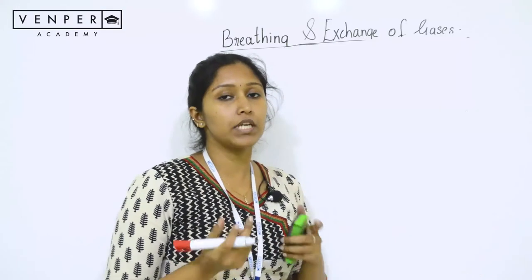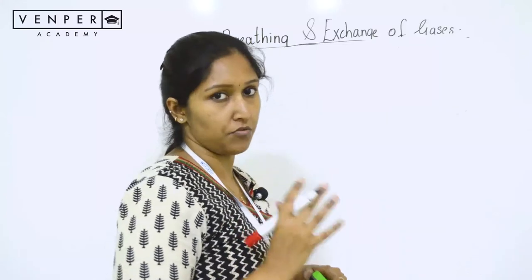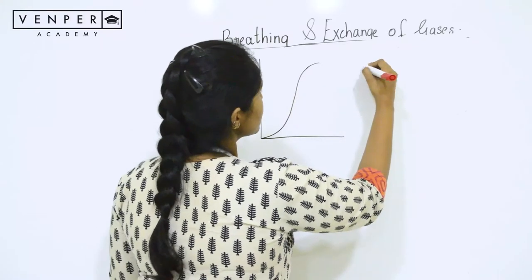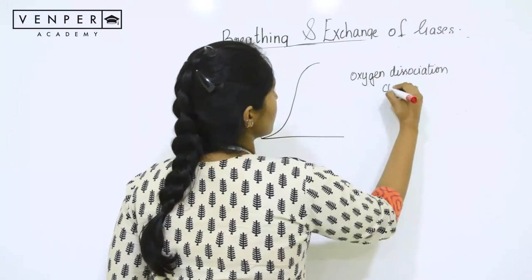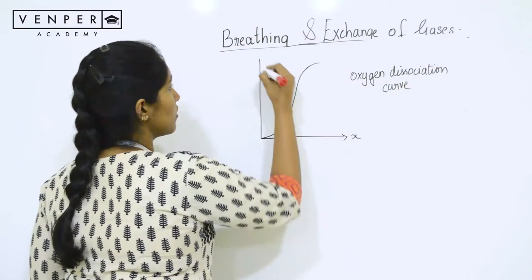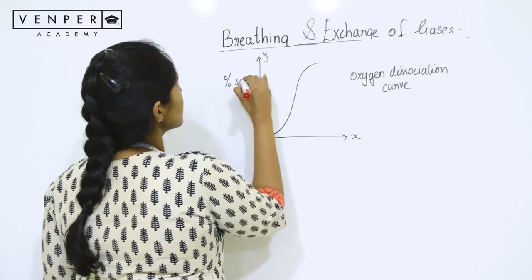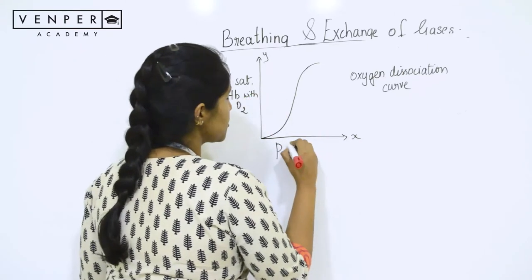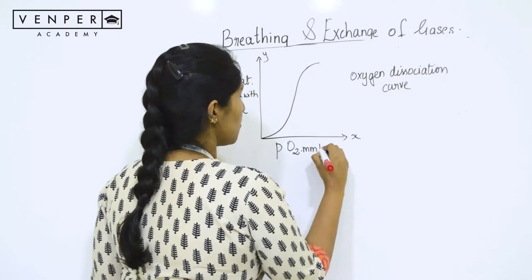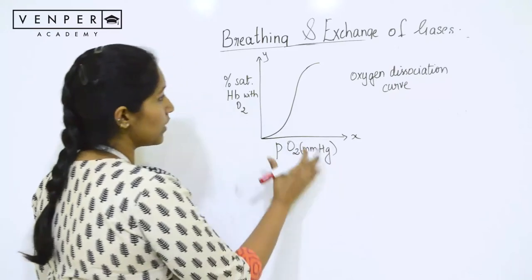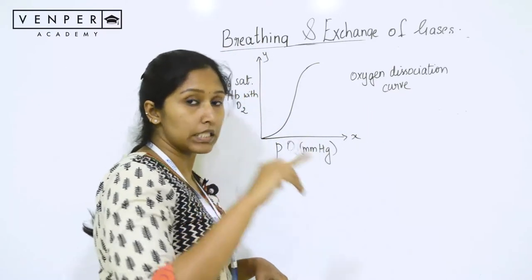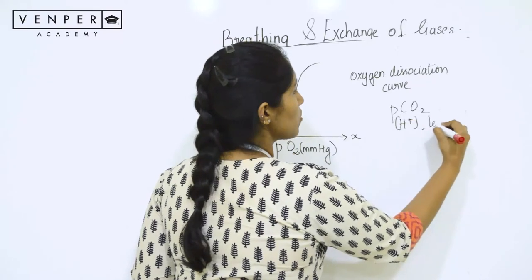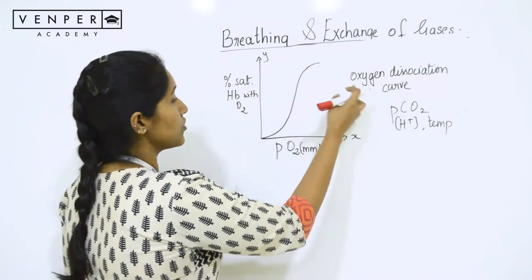To study the association and dissociation of oxygen with hemoglobin, we draw a specific curve called the oxygen dissociation curve. It is drawn between the percentage saturation of hemoglobin with oxygen in relation to the partial pressure of oxygen in mmHg. This curve helps us understand the effect of the other three factors — partial pressure of carbon dioxide, hydrogen ion concentration, and temperature — on the binding of oxygen with hemoglobin.